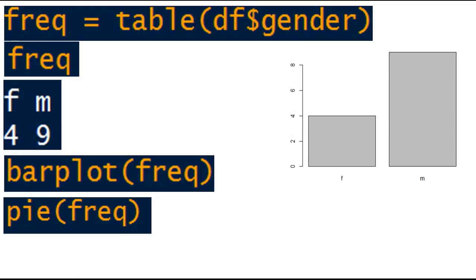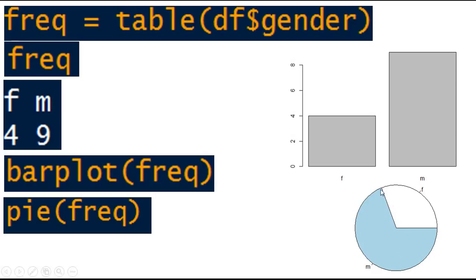You can also see the proportions of male with respect to female using the pie command. So use the pie command on this frequency and you will get the proportions among male and female. As you can see, the proportion of male is greater than female.